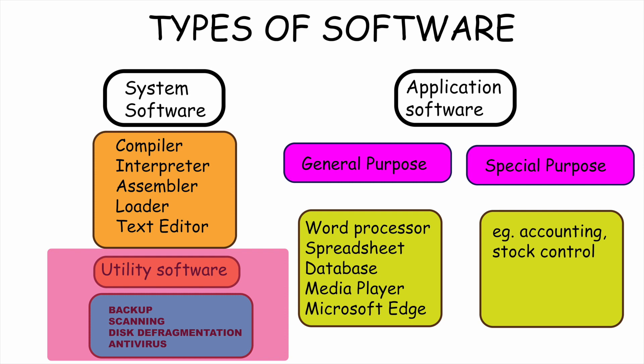Application software: This is a set of programs that provides a platform for the user to carry out his or her tasks. Application software runs at the background of a system software or an operating system. It means we need an operating system for any application software to work efficiently.